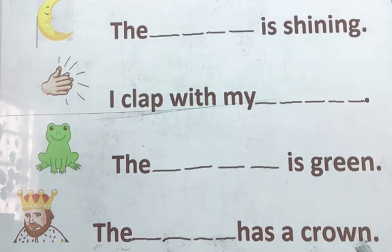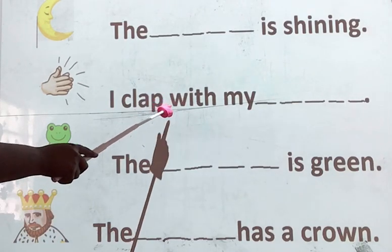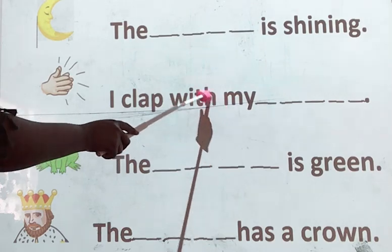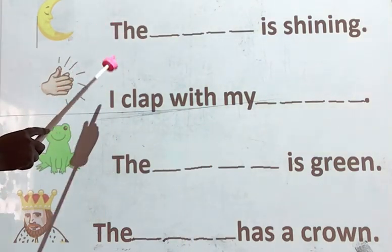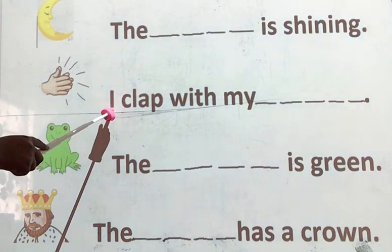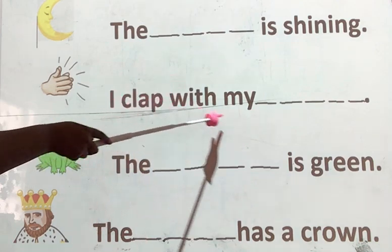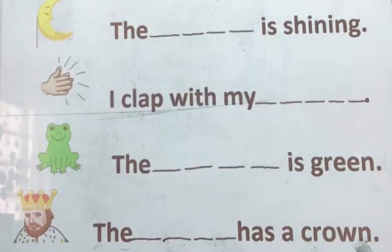A sentence is a group of words put together. The sentence has many words and after each word there is a space. At the beginning, when you start writing a sentence, you begin with a capital letter — uppercase. And when you finish, you have to end with a full stop.